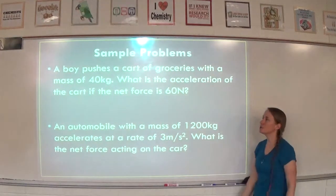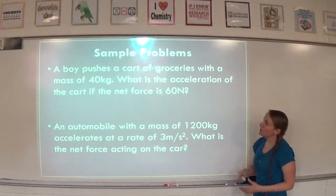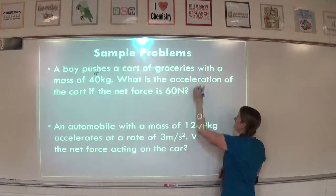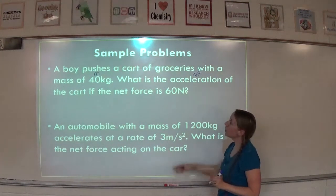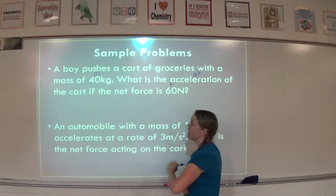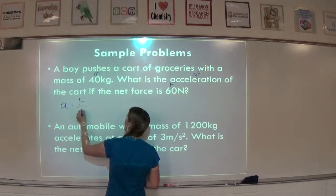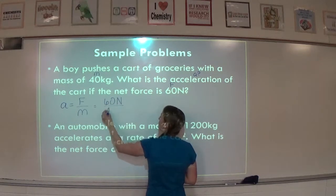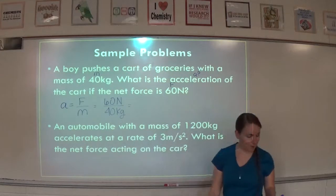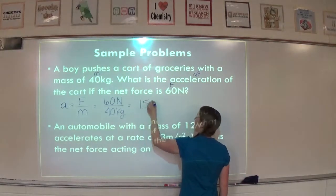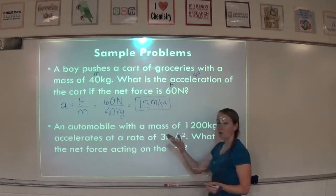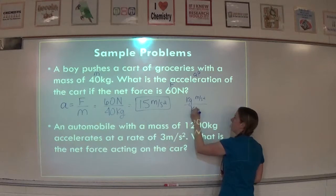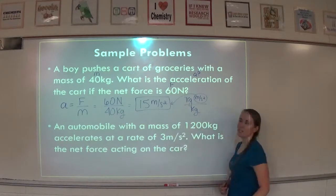Pause the video and try this on your own, then check back. A boy pushes a cart of groceries with a mass of 40 kilograms. What is the acceleration of the cart if the net force is 60 Newtons? Acceleration equals force over mass, so we plug in: force is 60 Newtons divided by mass 40 kilograms. 60 divided by 40 is 1.5, and the unit for acceleration is meters per second squared. As before, Newtons divided by kilograms cancels to give meters per second squared.